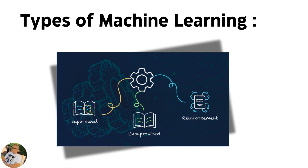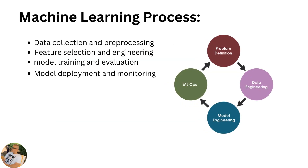In unsupervised learning, the machine trains by itself to produce output. Reinforcement learning learns from experience. The machine learning process has four steps: problem definition, data engineering, model engineering, and machine learning ops.